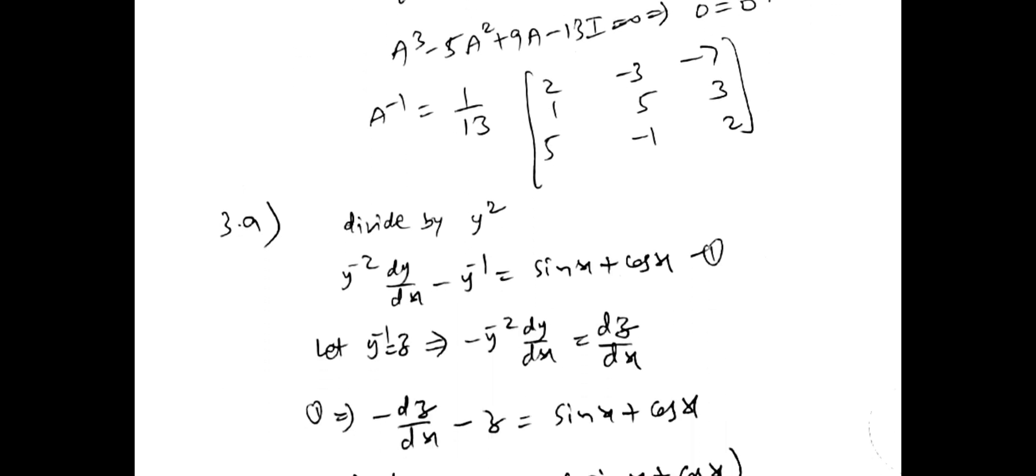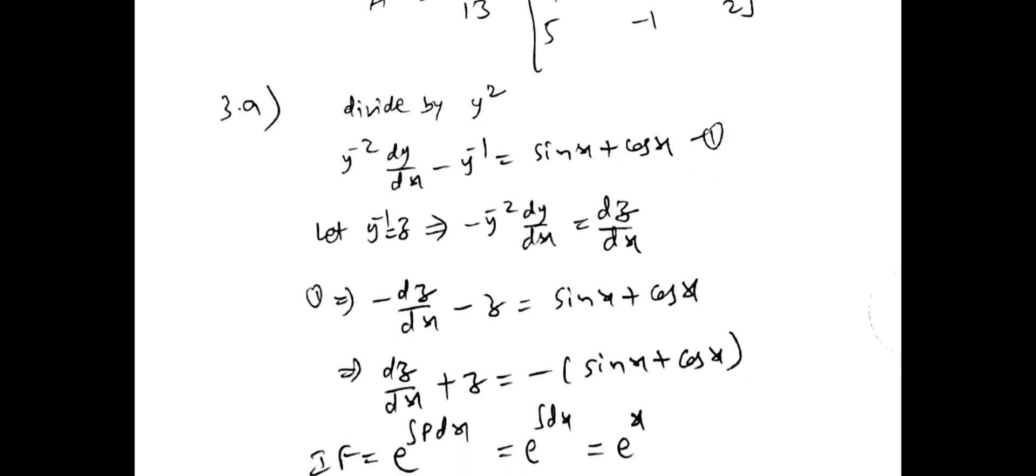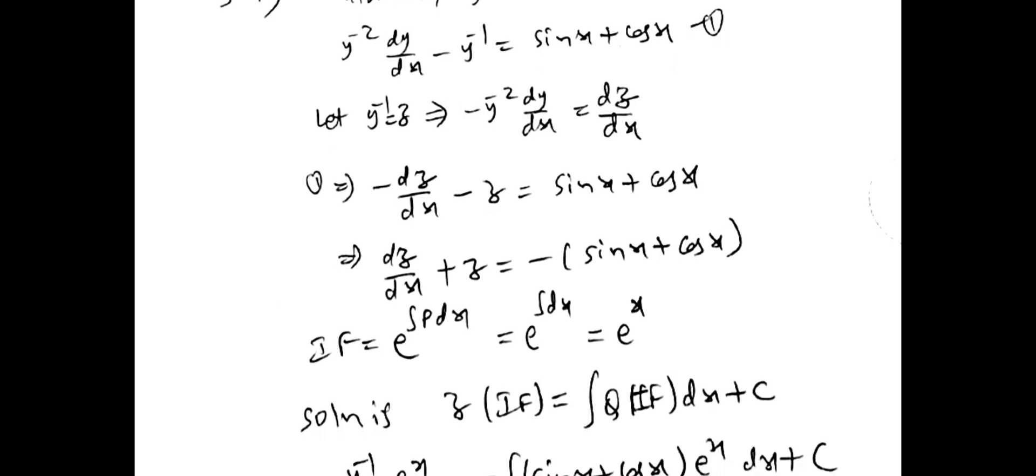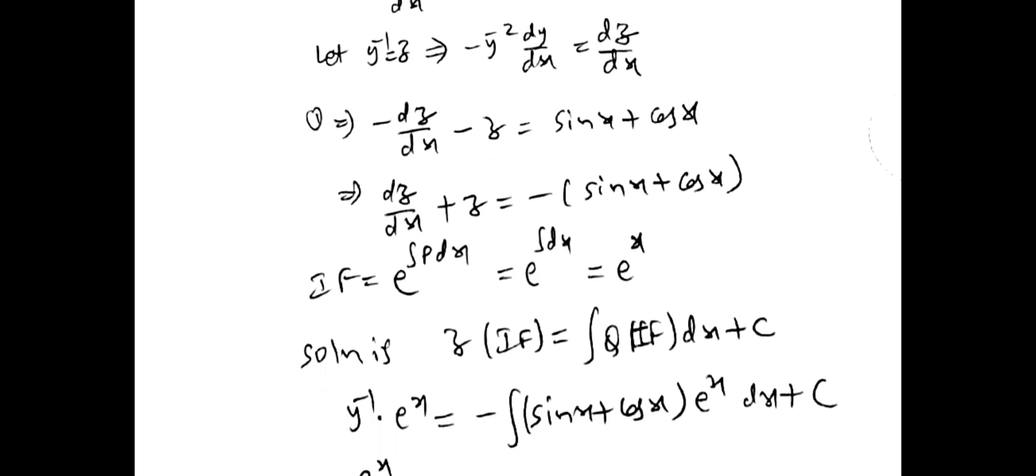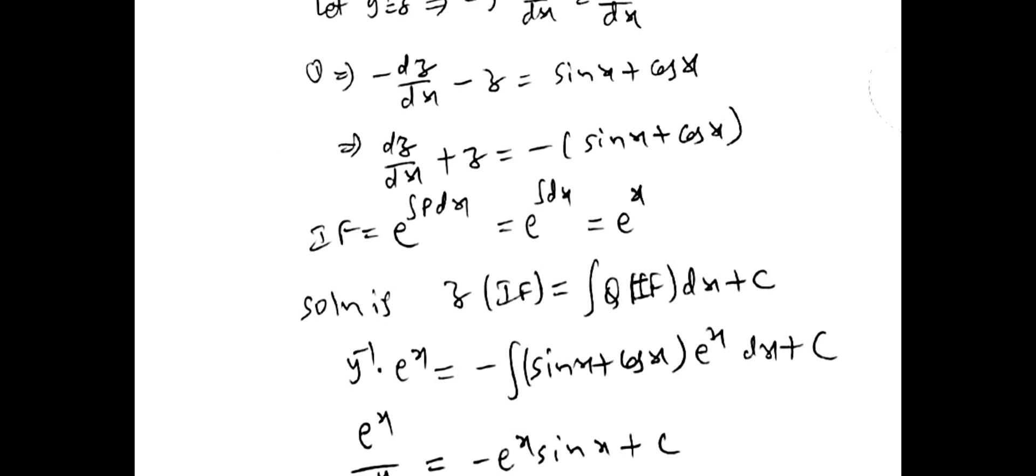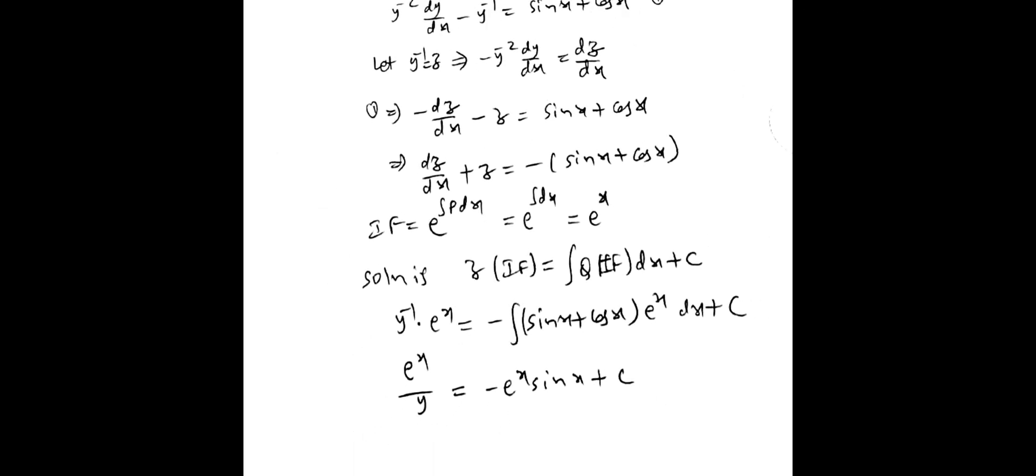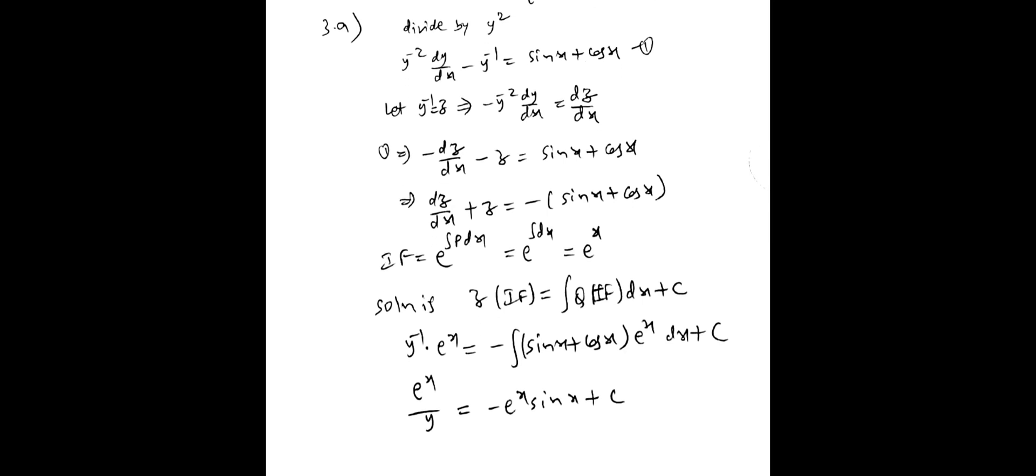Third my A bit is Bernoulli. Suppose I divide by y square. Then y inverse is equal to some t or z you can take. So you will get the value. Substitute in terms of z. So you will get in the form of LDE, linear difference LDE form. Then integrating factor you have to find out. After finding integrating factor, general solution is z into integrating factor integral, Q into integrating factor dx plus c. Then integrate it. You will get the answer. This is the answer of 3a.